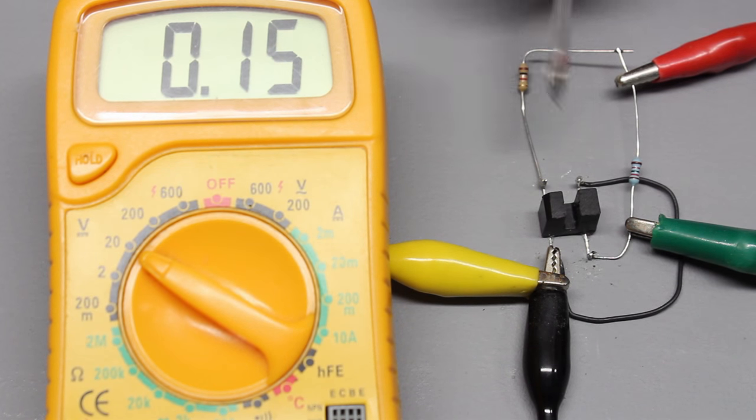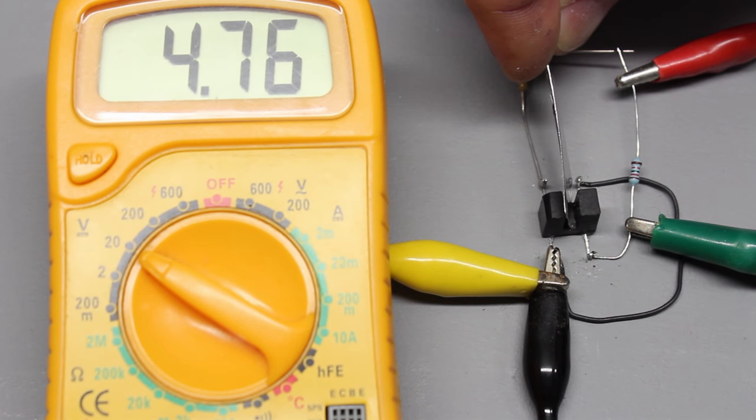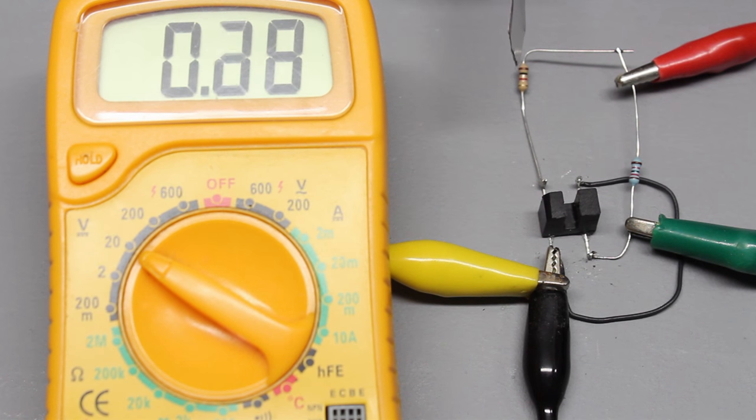Whenever the light is blocked by a piece of a tin can, the voltage across the receiver is rising to nearly 4.8V, while it falls back to 0.15V if the metal sheet is removed.